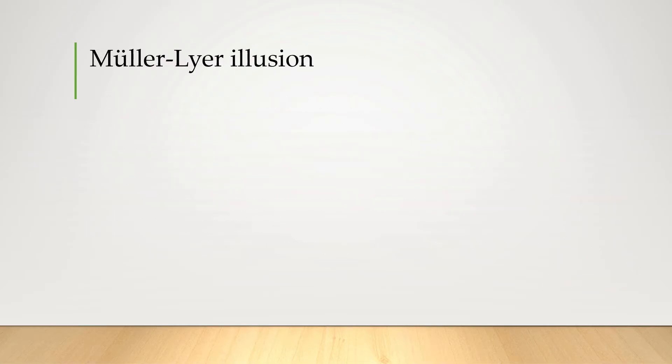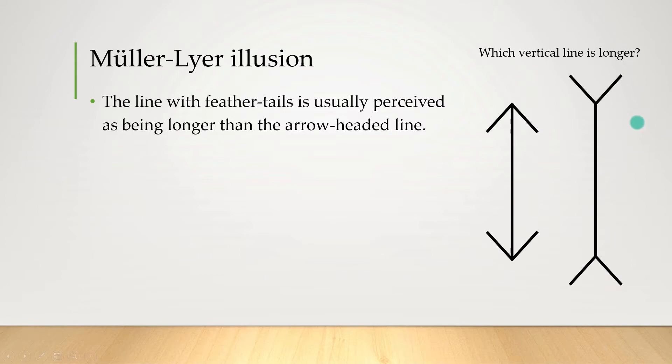Our next illusion, the Müller-Lyer, is a little bit similar to the Ponzo illusion. We're also comparing two lines, vertical ones this time, and asking the question which one is longer. As your brain might be telling you, the line with the feather tails that's sticking out is usually perceived as being longer than these arrow-headed lines. It's another fascinating optical illusion, but of course here in psychology we're interested in seeing if we can explain why that's the case.